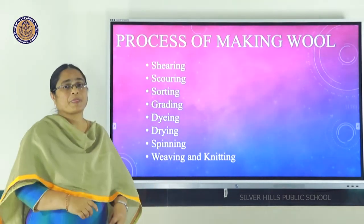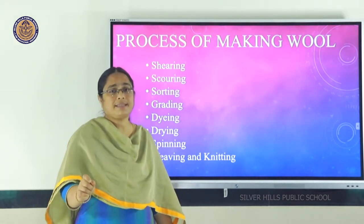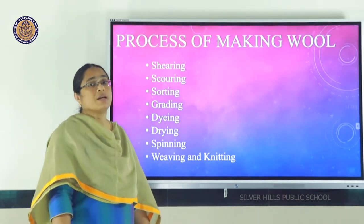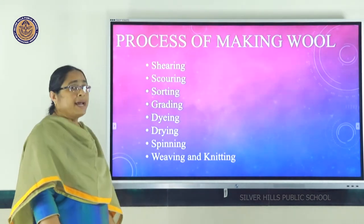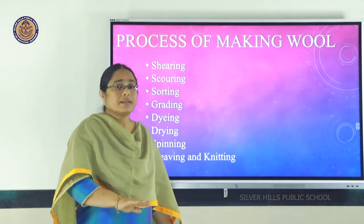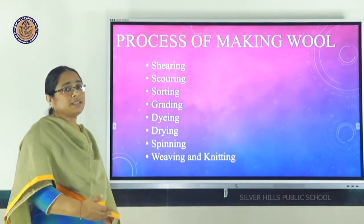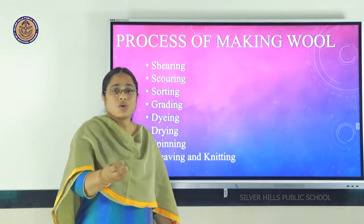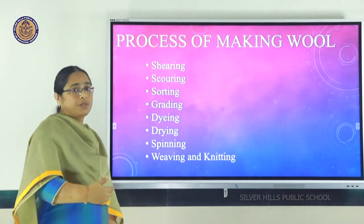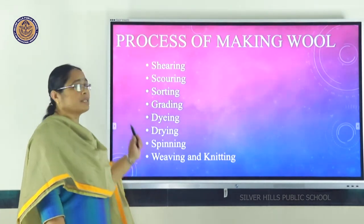Next is scouring. Wool may contain grease, dust, dirt, and bacteria, so it is cleaned in big tanks with hot water and detergents — this process is called scouring. Next, spoiled or useless wool is discarded; this process is called sorting. Then comes grading, where coarse outer wool, soft inner wool, long wool, and short wool are separated according to their texture, length, and appearance.